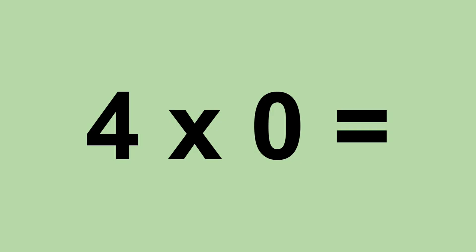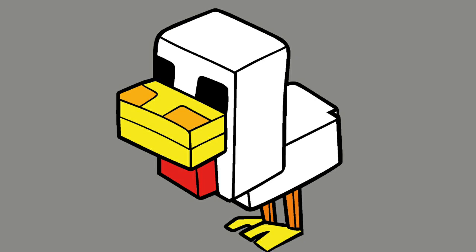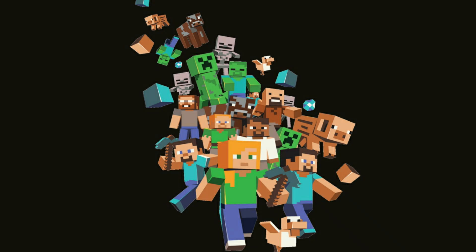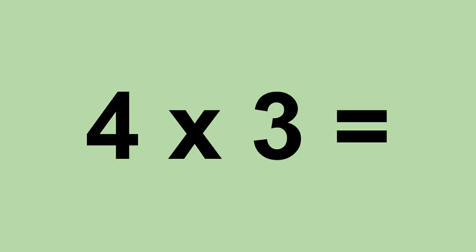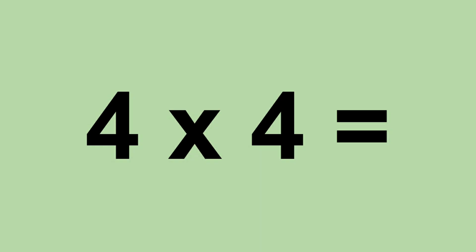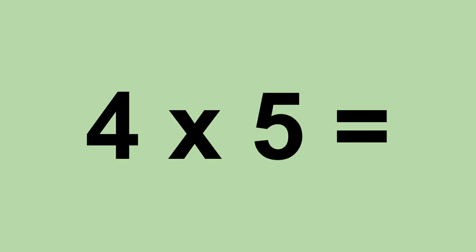4 times 0 equals 0. 4 times 1 equals 4. 4 times 2 equals 8. 4 times 3 equals 12. 4 times 4 equals 16. 4 times 5 equals 20.